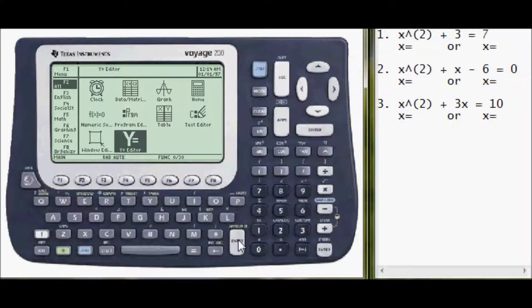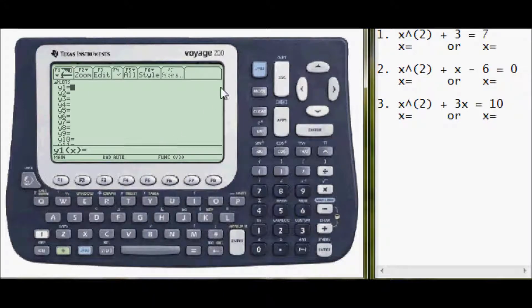Press enter on the y equals editor and we're going to plot the first graph here. Enter x squared, so x carat squared, close parenthesis, plus 3, press enter. We're going to plot the other half of this equation as y2. y2 equals 7. Then we'll determine where they intersect.